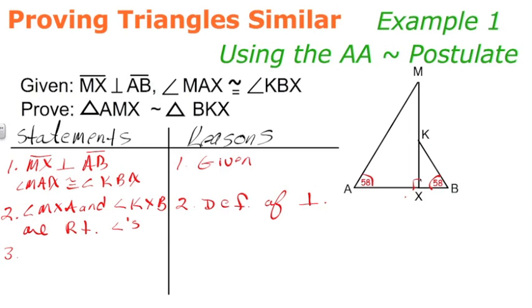Now that we've established that these angles are right angles, we can make our congruent statement saying that angle MXA is congruent to angle KXB. And that's because all right angles are congruent, and that's a theorem that you usually learn early on in a geometry course. Now we have established that these angles are congruent and these angles are congruent.